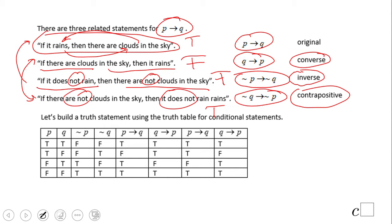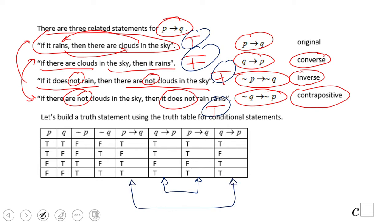Now you see a truth table I constructed for all these possible choices. If you notice, the original was true and the contrapositive was true based on our example, while the converse and inverse were both false. That gives you the idea that these two columns go together — they are equivalent statements. So the original and contrapositive are equivalent, and the converse and inverse are equivalent. Very important to look at the equivalent statements.